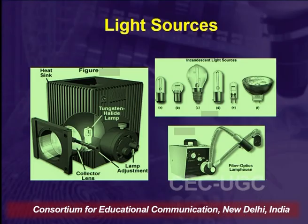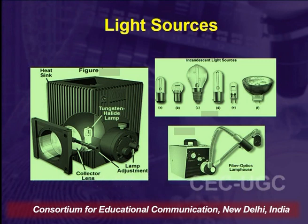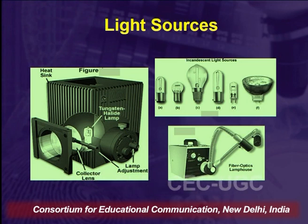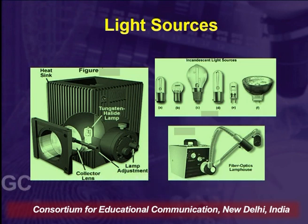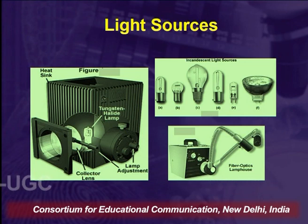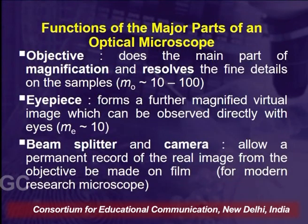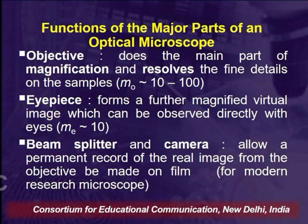Different light sources can be used in microscopes depending on the specimen and type of microscope. When a specimen is transparent, direct light can be passed through it. When the specimen is opaque, transmitted light must be used. In a compound microscope, samples are typically such that light can pass through them, while in a stereo microscope, samples are generally opaque.